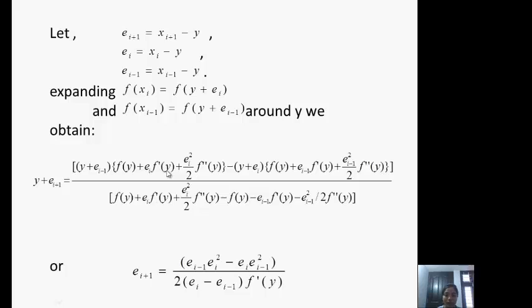By this we have the error term in (i+1)-th iteration as [e_{i-1} e_i^2 - e_i e_{i-1}^2] / [2(e_i - e_{i-1}) f'(y)].